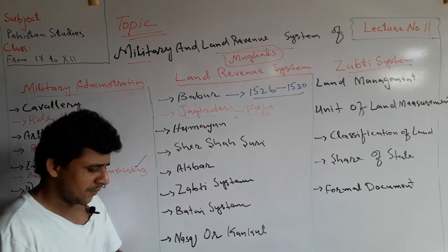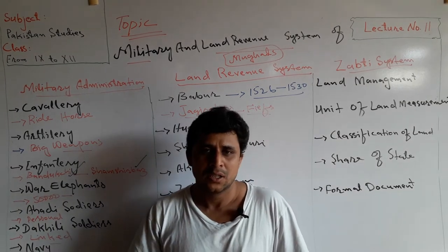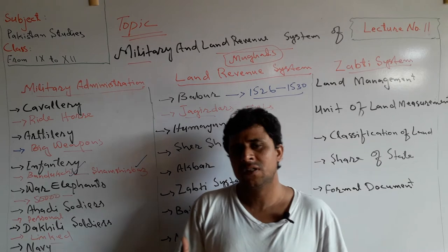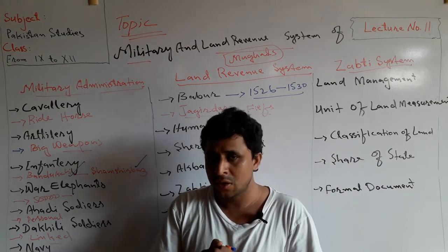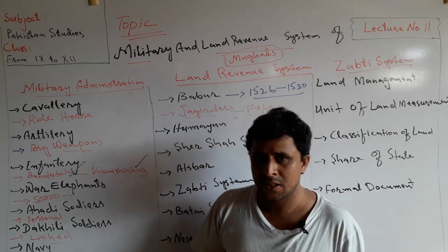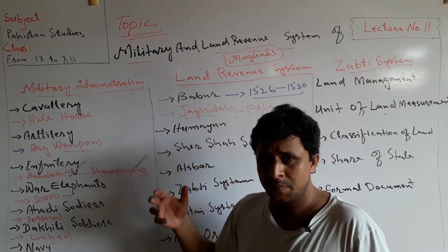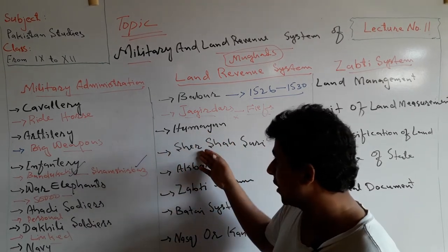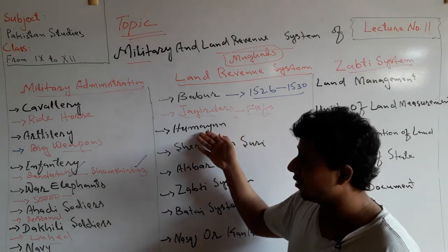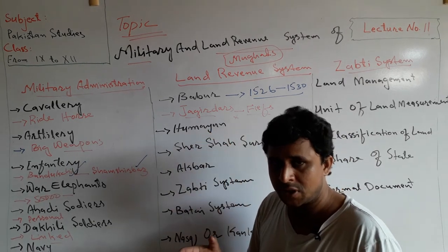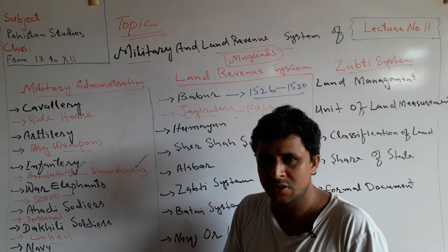Humayun was Babur's son. He was not a very capable ruler; when he occupied the throne he was only 22 years old, so he lacked the experience to rule a vast empire. He lost his throne when Shershah Suri snatched it from him. Though Humayun eventually recaptured his throne, he died just six months later.